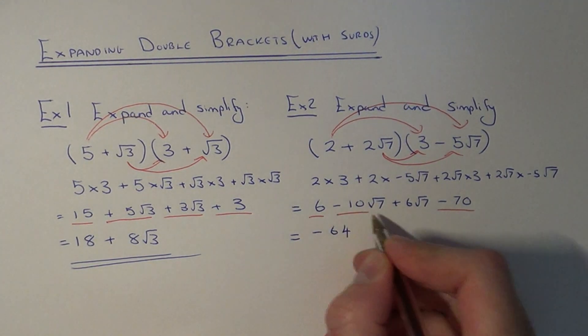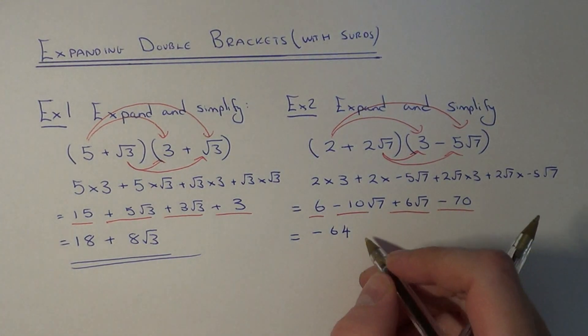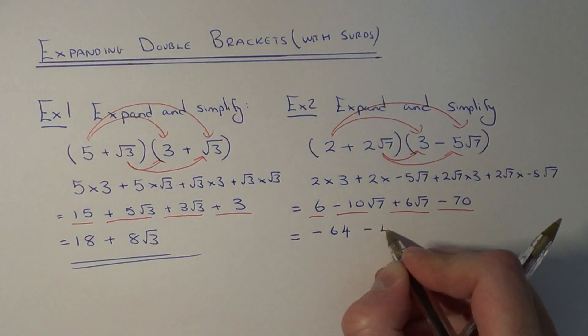And simplify the surds in the middle. Minus 10 root 7 add 6 root 7 will give you minus 4 root 7.